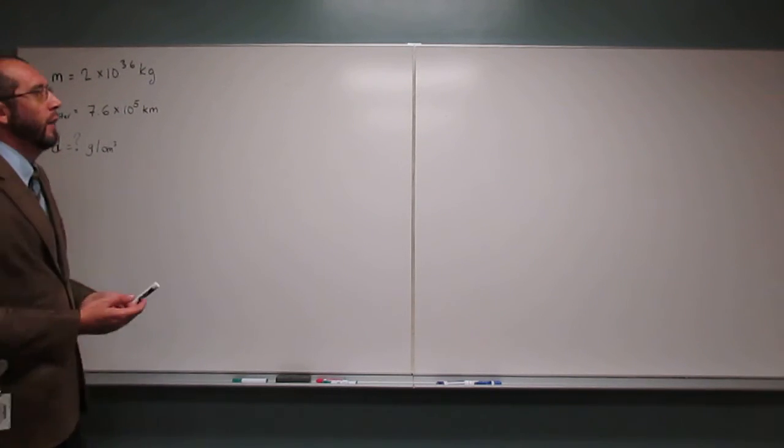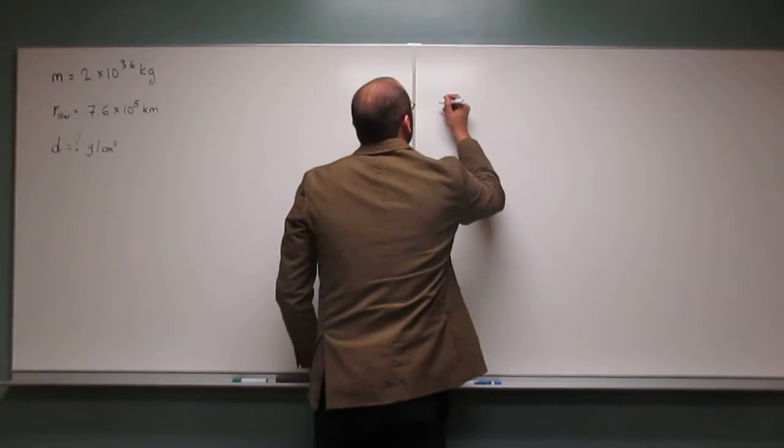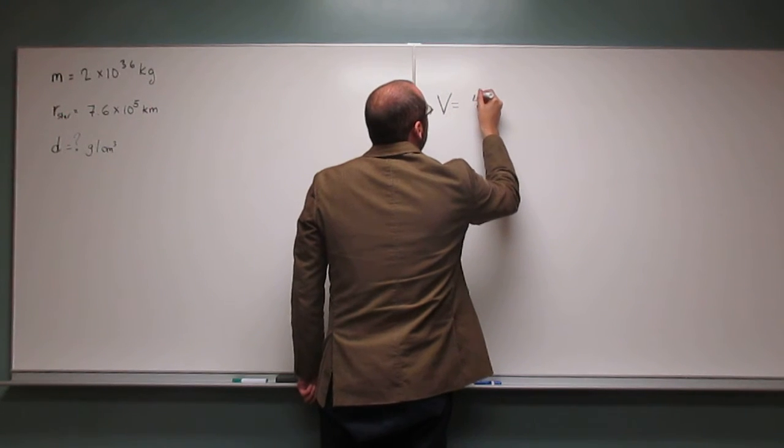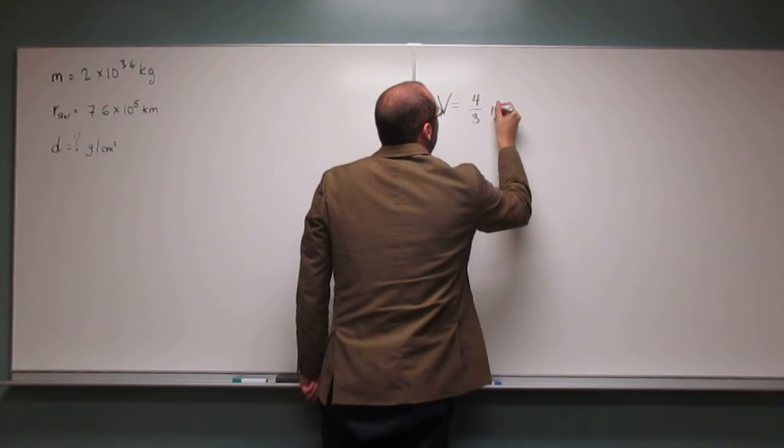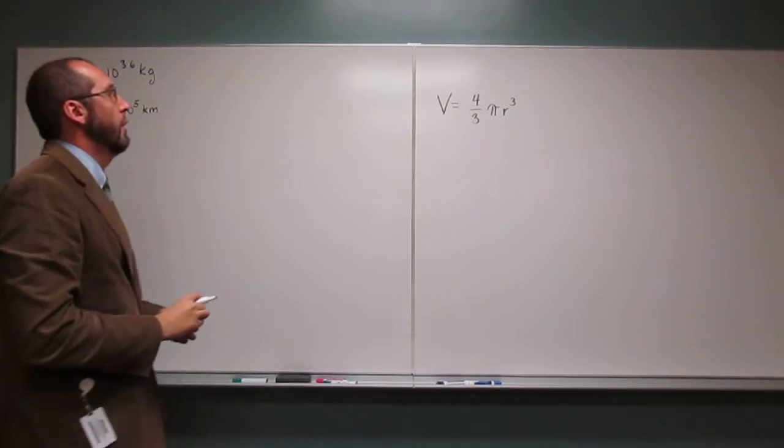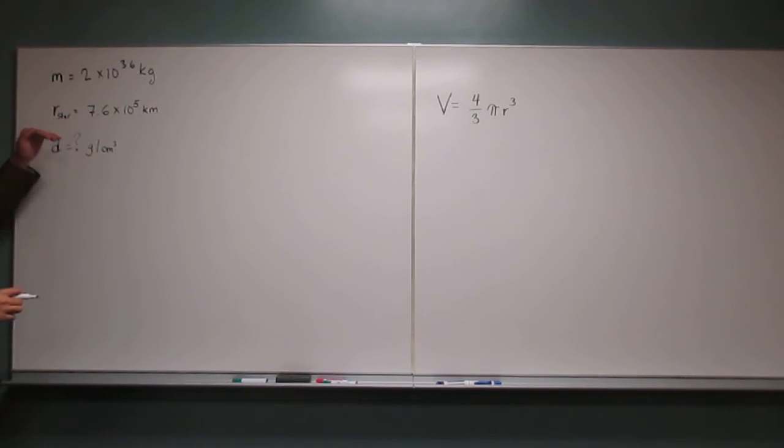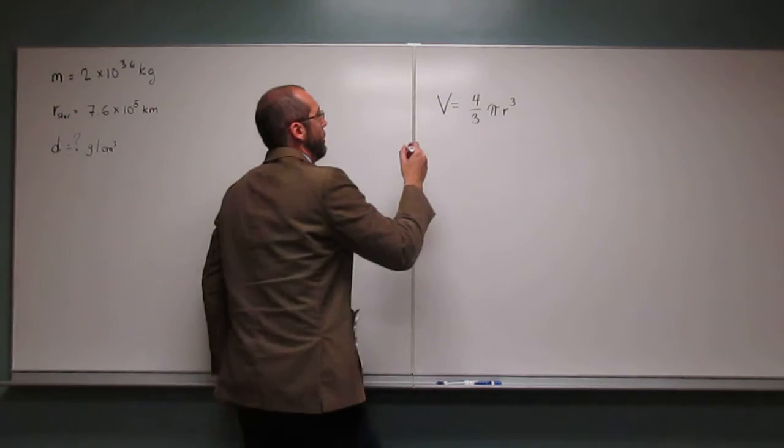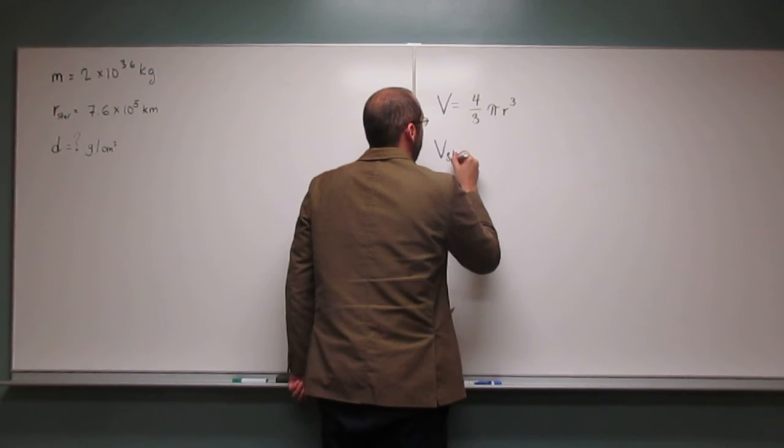So if you recall from geometry class, volume equals 4 thirds pi r cubed. So r being the radius. From this, we should be able to figure out the volume of the star.